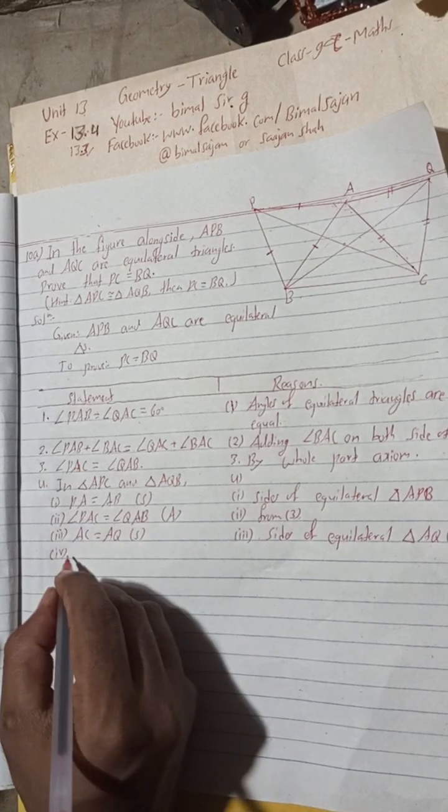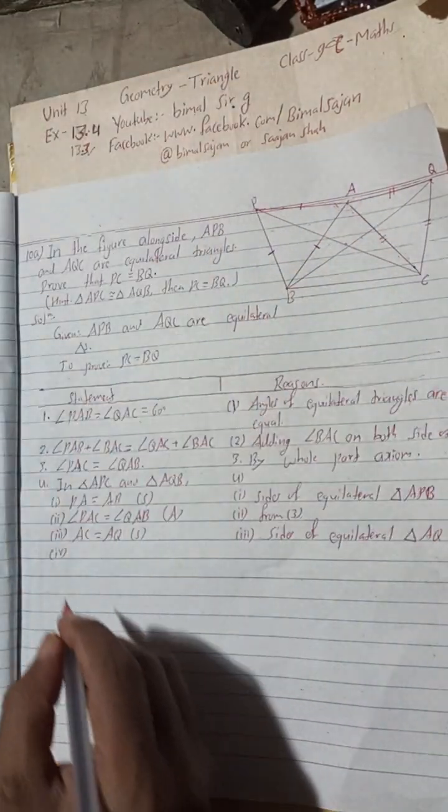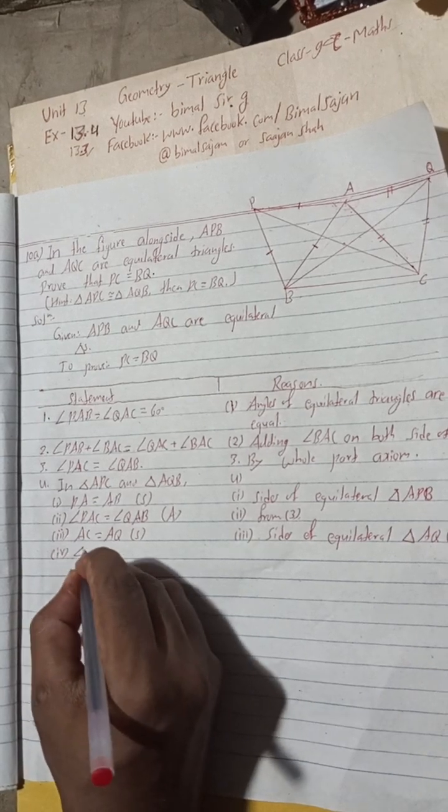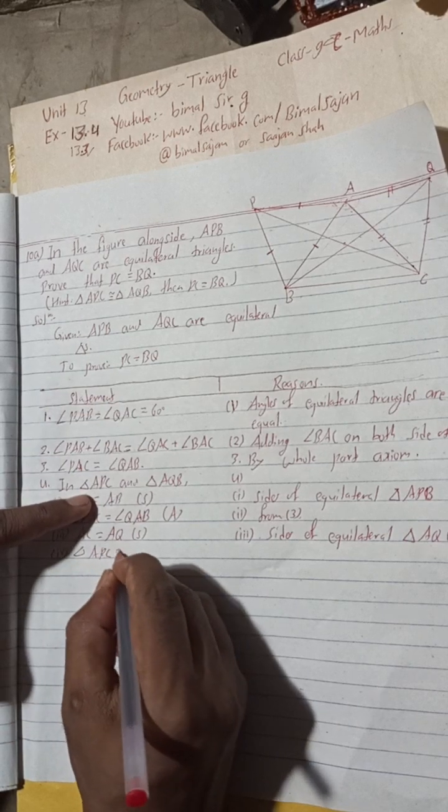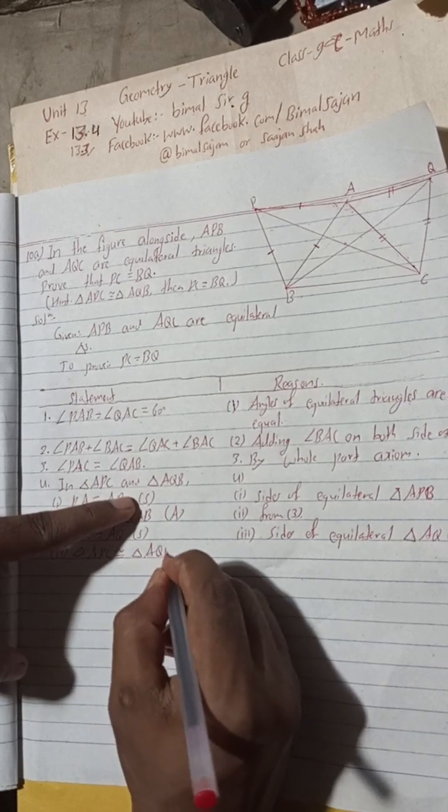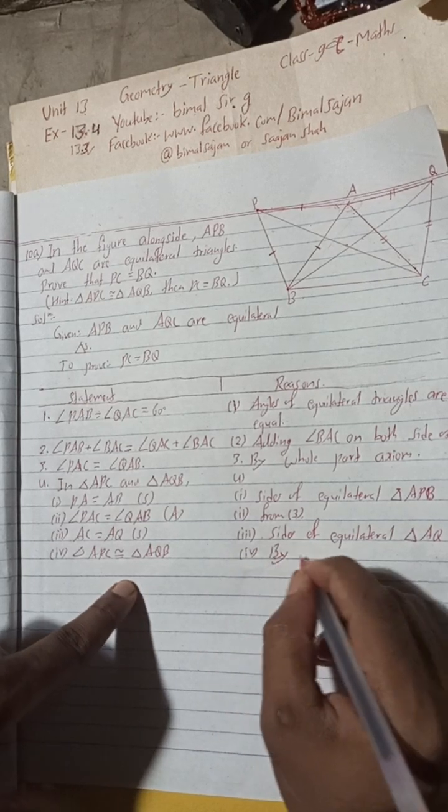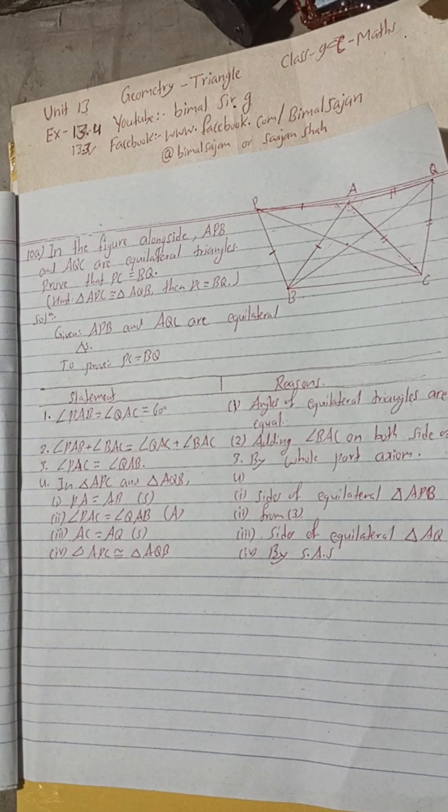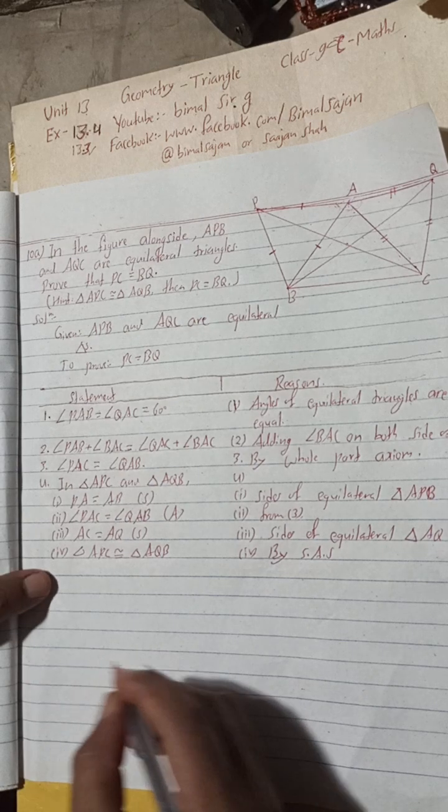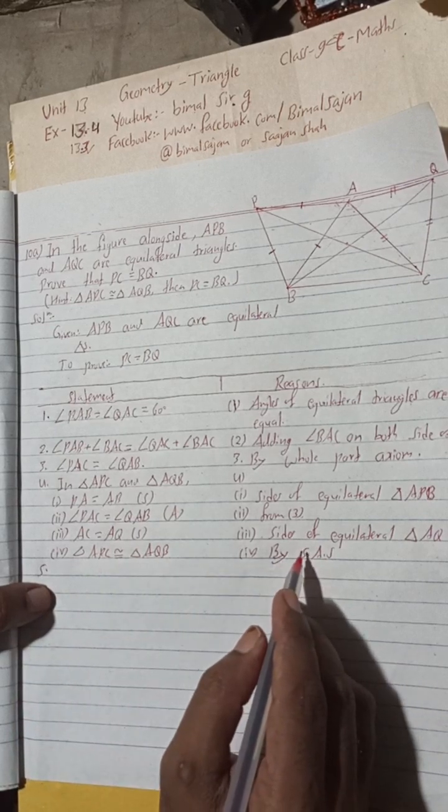Now we can write number four: Triangle APC is congruent to triangle AQB. The reason is by side-angle-side. By side-angle-side congruence, we have proven the triangles are congruent.